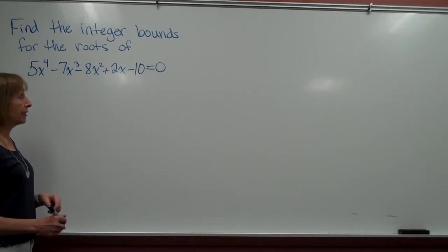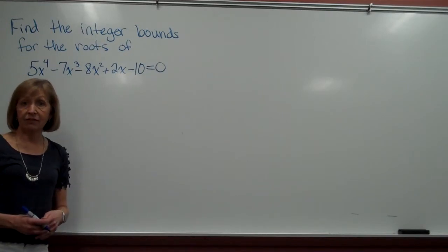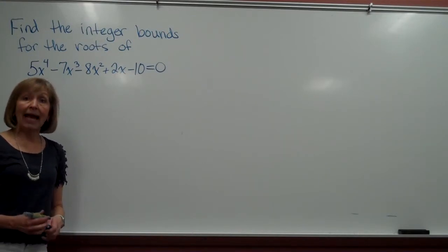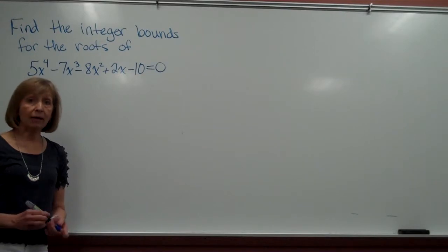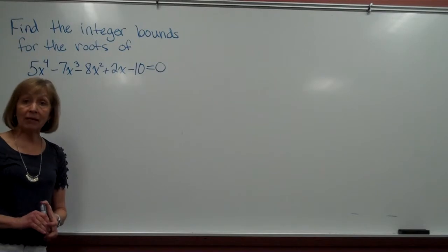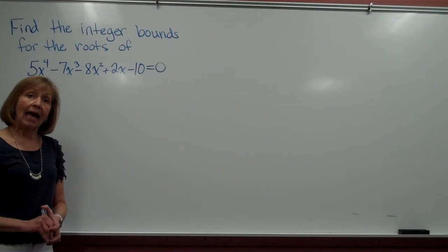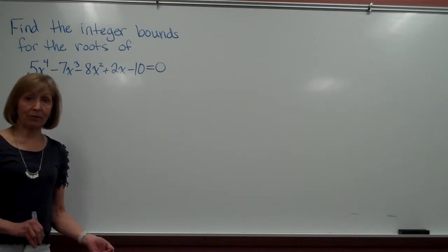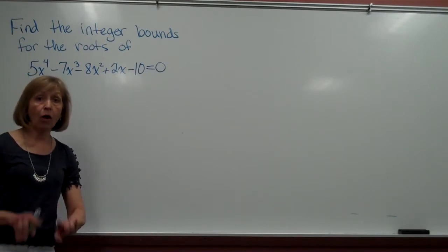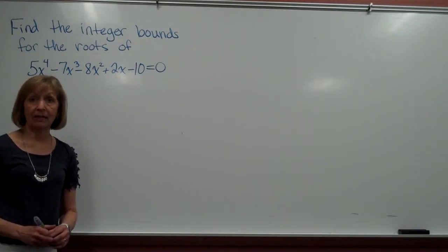Now with the integer bounds on roots, there is a way to tell by what happens with your synthetic division table. If you're synthetically dividing by a positive number and the whole bottom row of the synthetic division process is all positive, then no number bigger than the number you divided by can be a real solution either. And if you're dividing by a negative number in your synthetic division process, with the entire bottom row coming out alternating signs, then no number smaller than that negative number can be a solution.